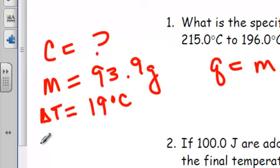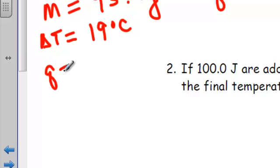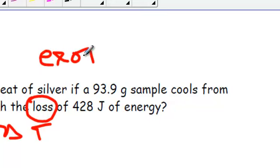And, what else do I know? With a loss of energy. So, I know that my Q is equal to 428 joules. Now, this loss tells me something. I could ask you, was this an endothermic or an exothermic process? And, because it lost, this would have been exothermic. Just using this to give you some more information. That doesn't help us right now in solving the problem.